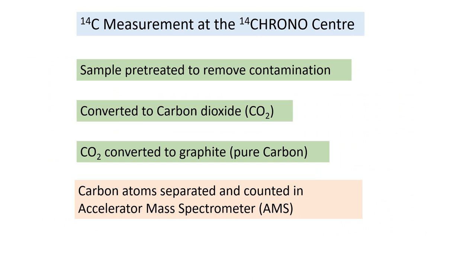The way C-14 is measured in our laboratory is: a sample comes in and it's pre-treated to remove any contamination — humic acids from soils, carbonates, or various things that you don't want to date. It's then converted to carbon dioxide, and that carbon dioxide is converted to graphite, which is pure carbon. The carbon atoms are then put into an accelerator mass spectrometer and separated and counted.